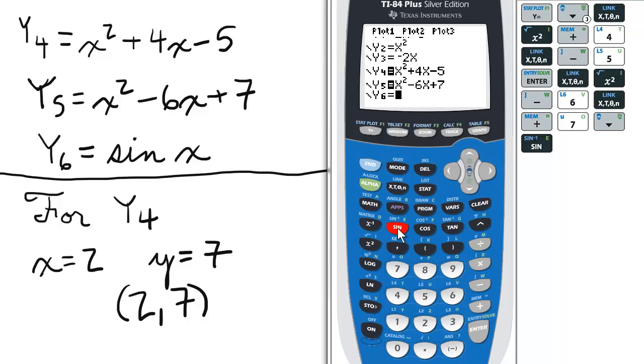Y6 will be sine x. Now, I'm only going to leave Y4 selected, so I'm going to deselect Y6 and Y5.